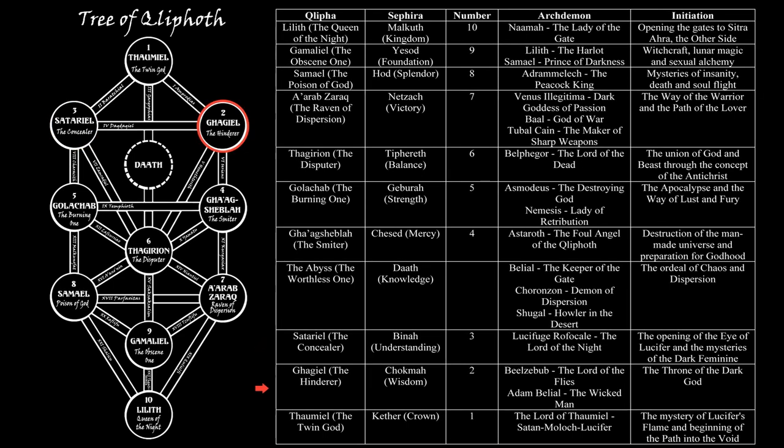The second realm in the final triad is Ghagiel, the Hinderer, corresponding to Chokmah, or Wisdom, on the Tree of Life. This realm is ruled by Beelzebub, the Lord of the Flies, and Adam Belial, the Wicked Man. Ghagiel is the throne of the Dark God, and the initiation of this realm is that of the Masculine Current of the Qliphoth.